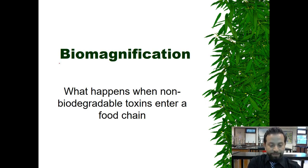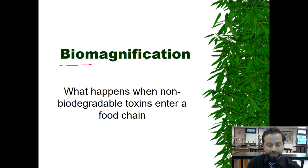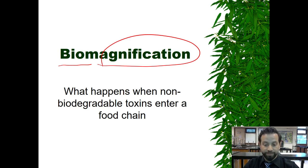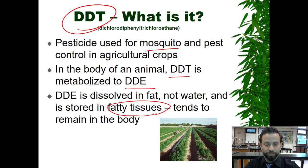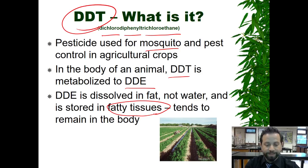So we are talking about biomagnification — magnify means to get bigger. Let's talk about DDT. What is DDT? It's dichlorodiphenyl trichloroethane. You don't have to remember that, but it's basically a pesticide that's used for mosquito and pest control when it comes to agricultural crops.